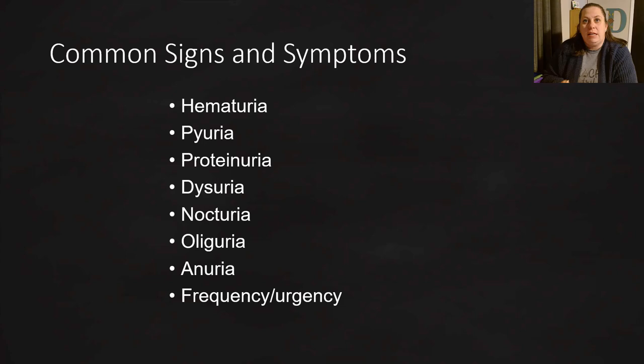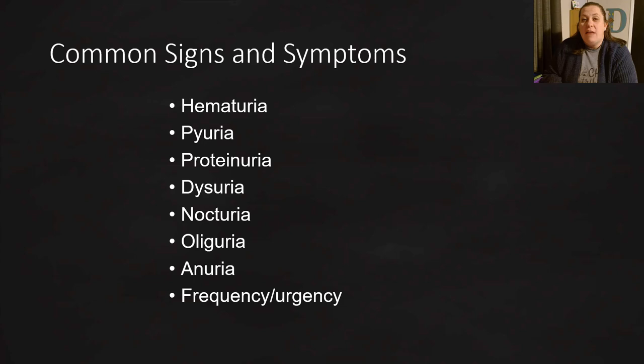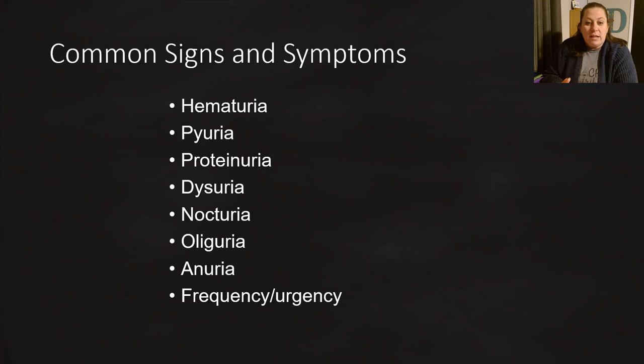There are common signs and symptoms seen with urinary system diseases. Hematuria is blood in the urine — it could be small amounts, large amounts, or even trace amounts detectable only by urinalysis. Pyuria is pus in the urine, indicating the immune system is fighting an infection with white blood cells and foreign invader debris. Proteinuria means there's protein in the urine; the main one detected is albumin.